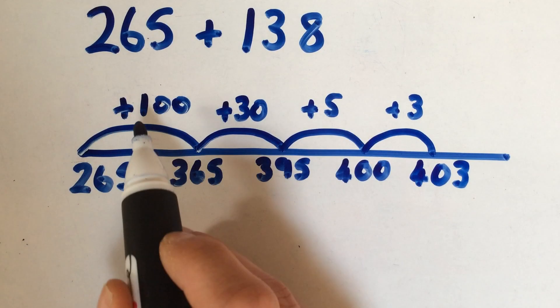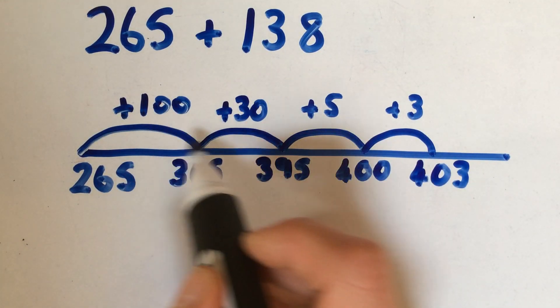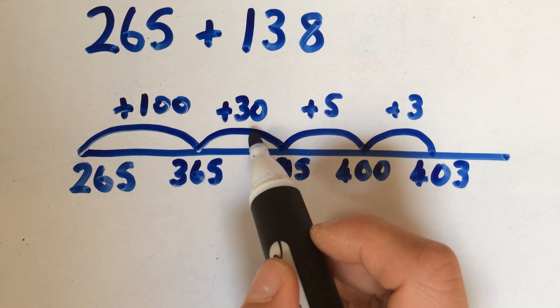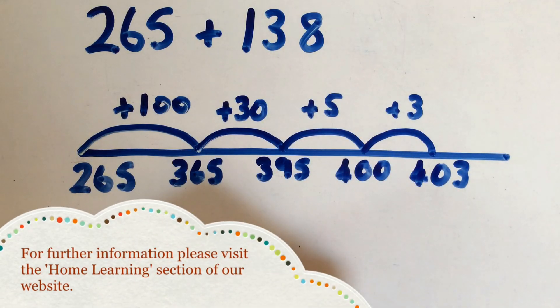Again, it doesn't matter how many jumps are needed. If you wanted to break up the 100 or break up the 30, so long as by the end the 138 has been added on.